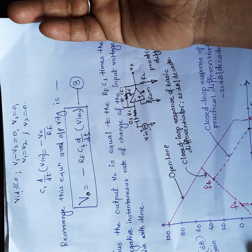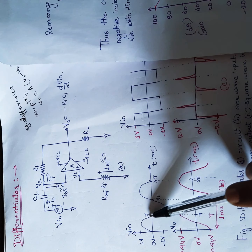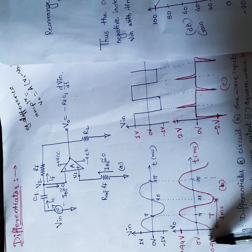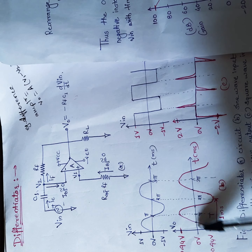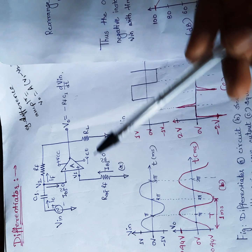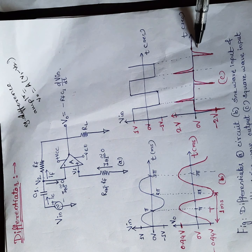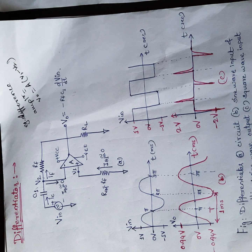So v0 = −Rf · C1 · d/dt(vin). If the input signal is a sine wave, its output will be minus cosine — the differential of sine. The input-output waveforms confirm this. If the input signal is a square wave, the output will be spikes at the output.